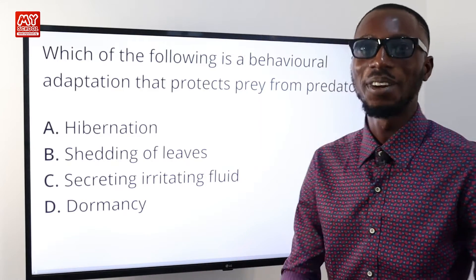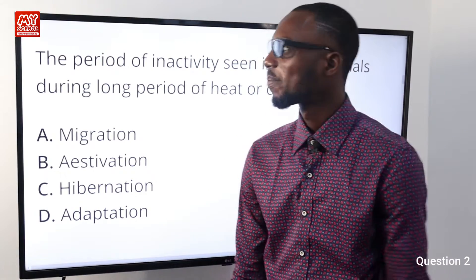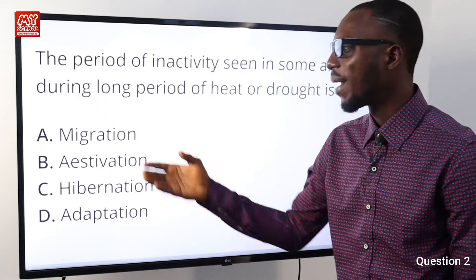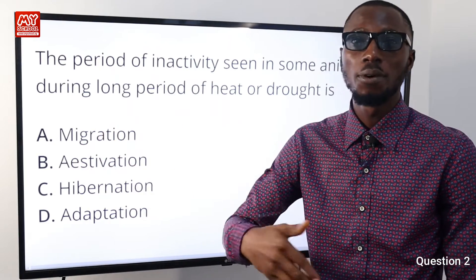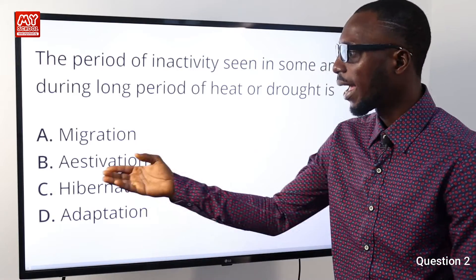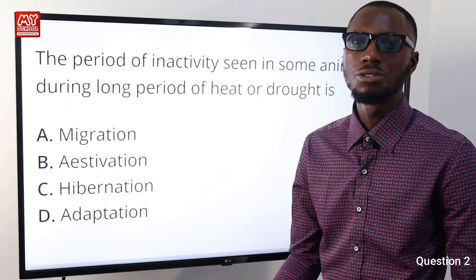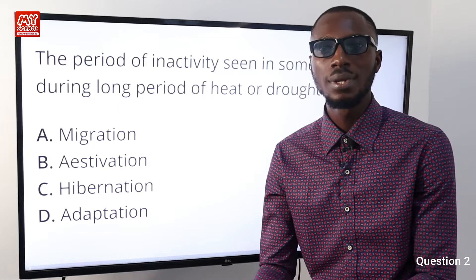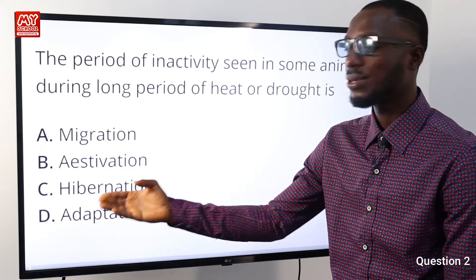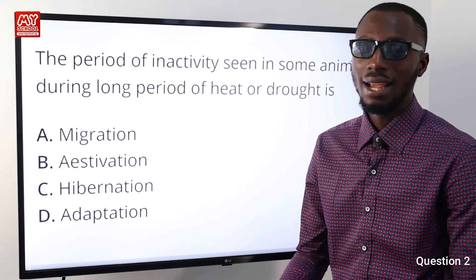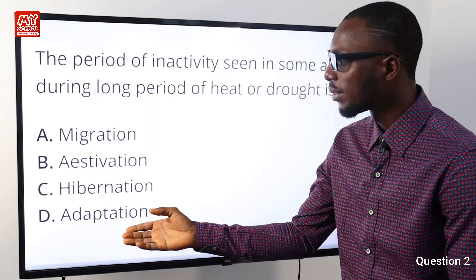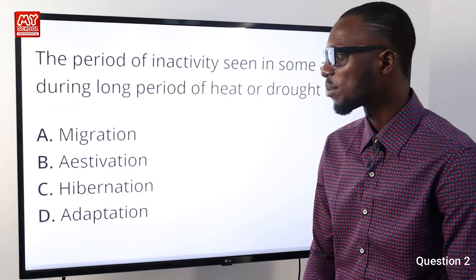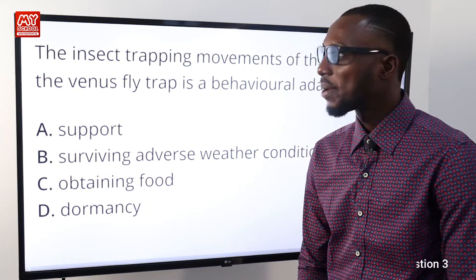Question number two: the period of inactivity seen in some animals during a long period of heat or drought is what? Migration is the movement of animals from one place to another, probably in search of food, water, or space. Estivation is a period of inactivity in animals due to harsh weather conditions of heat or drought over a long period of time — examples include snails and some fishes. Hibernation is also a long period of inactivity in certain animals, like bears and squirrels. So option B, estivation, is correct.